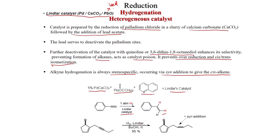Lindlar's catalyst (5% Pd on calcium carbonate, lead acetate, quinoline) is very effective for syn addition. For example, phenylacetylene goes to styrene with two hydrogens from the same side. Here a triple bond is being reduced — with H2, Lindlar's catalyst, in butanol — to give the cis olefin, while the other functional groups are untouched.